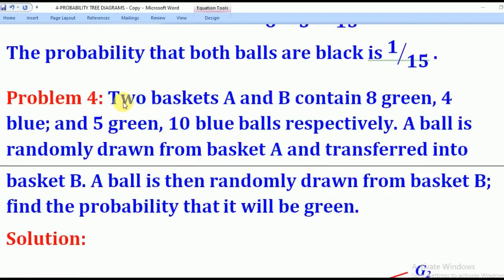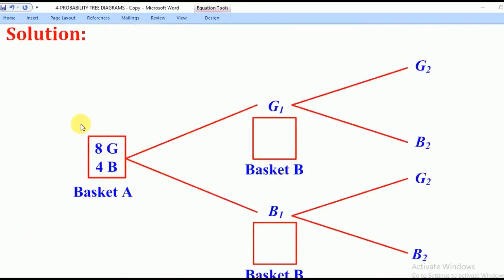Now we'll go to Problem 4. Two baskets, A and B, contain eight green, four blue, and five green, ten blue balls respectively. A ball is randomly drawn from basket A and transferred into basket B. A ball is then randomly drawn from basket B. The sketch shows you pick a ball from basket A, transfer it to basket B, and then pick a ball from basket B.